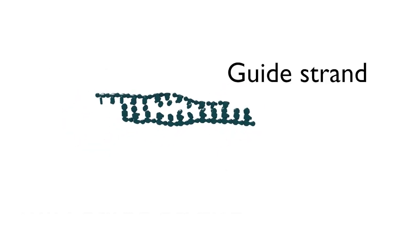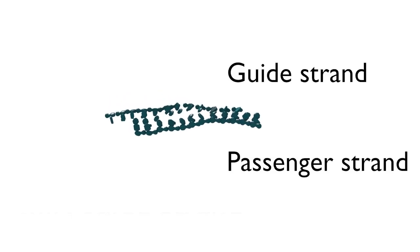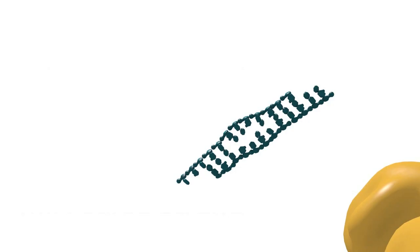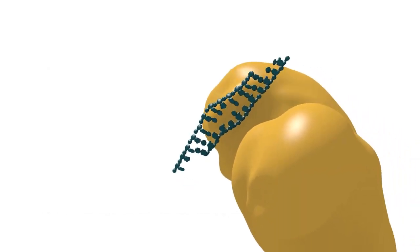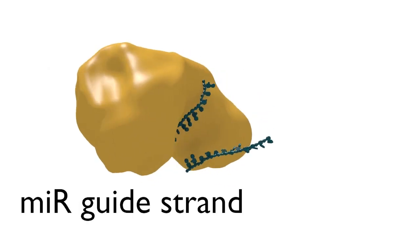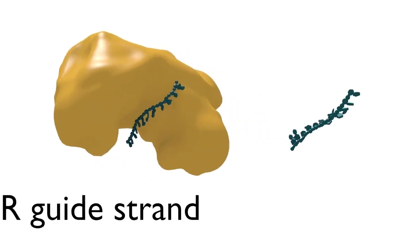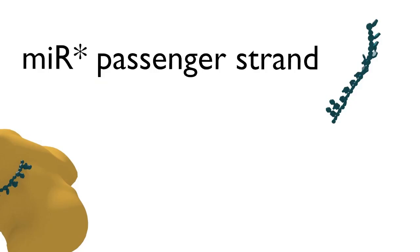The two strands of this duplex RNA are called the guide and passenger strands. Once the miR-miR-star duplex has been generated, it is loaded into the argonaute protein that is dedicated to microRNA-mediated silencing reactions. If the duplex is loaded in an appropriate orientation, one of the RNA strands called the miR guide strand is retained, while the other strand, the miR-star passenger strand, is selectively removed.